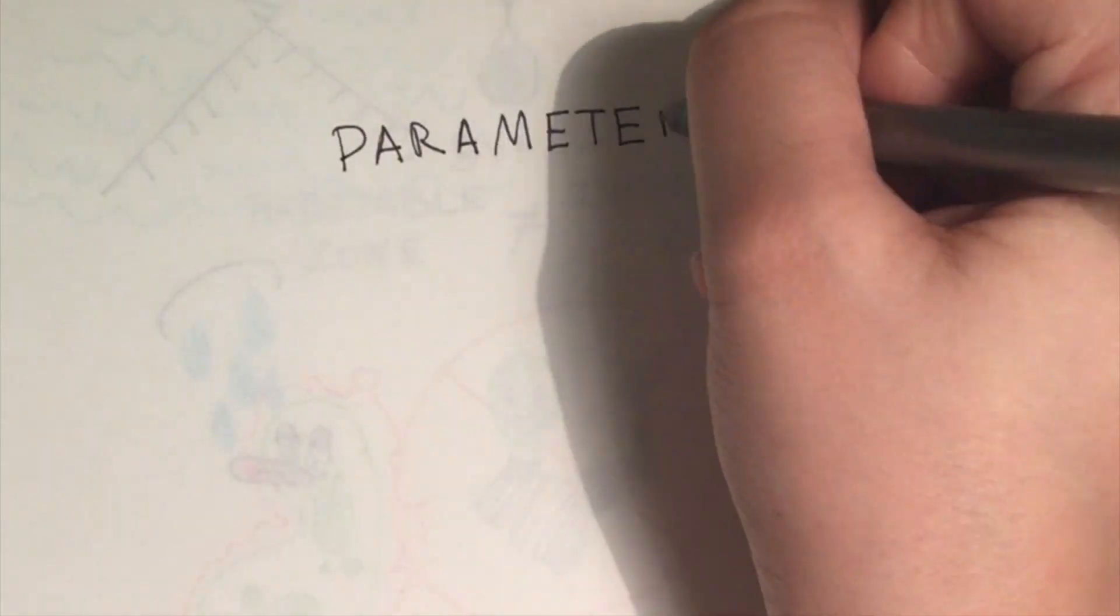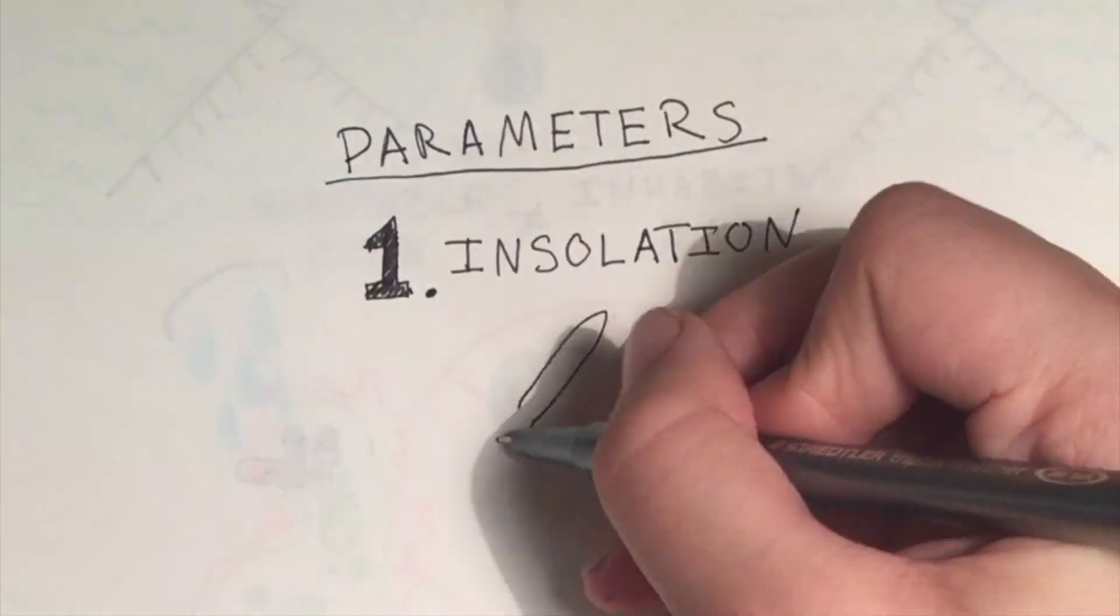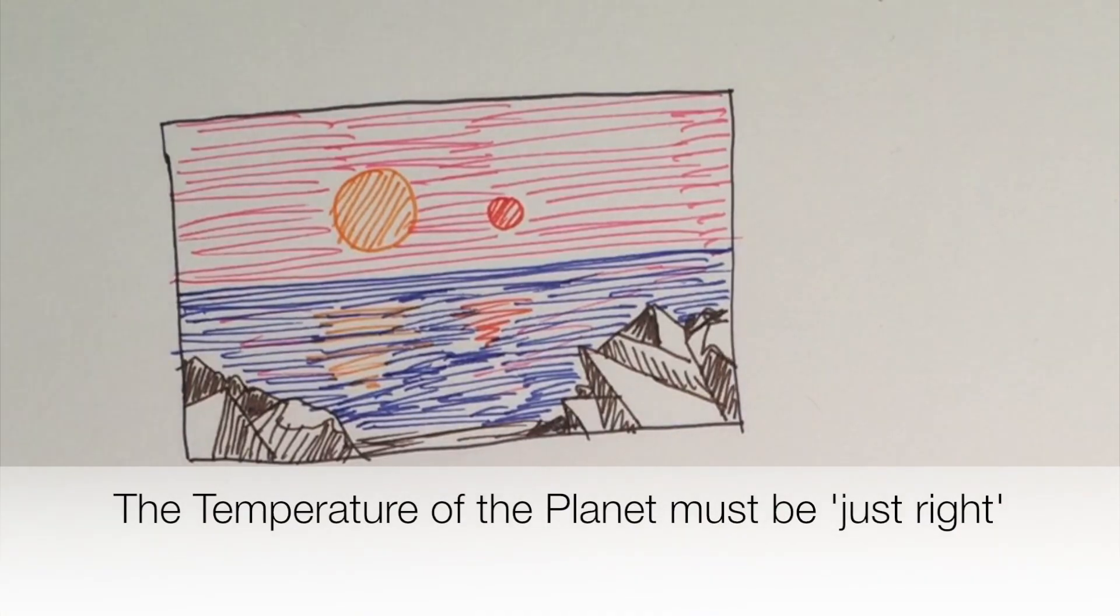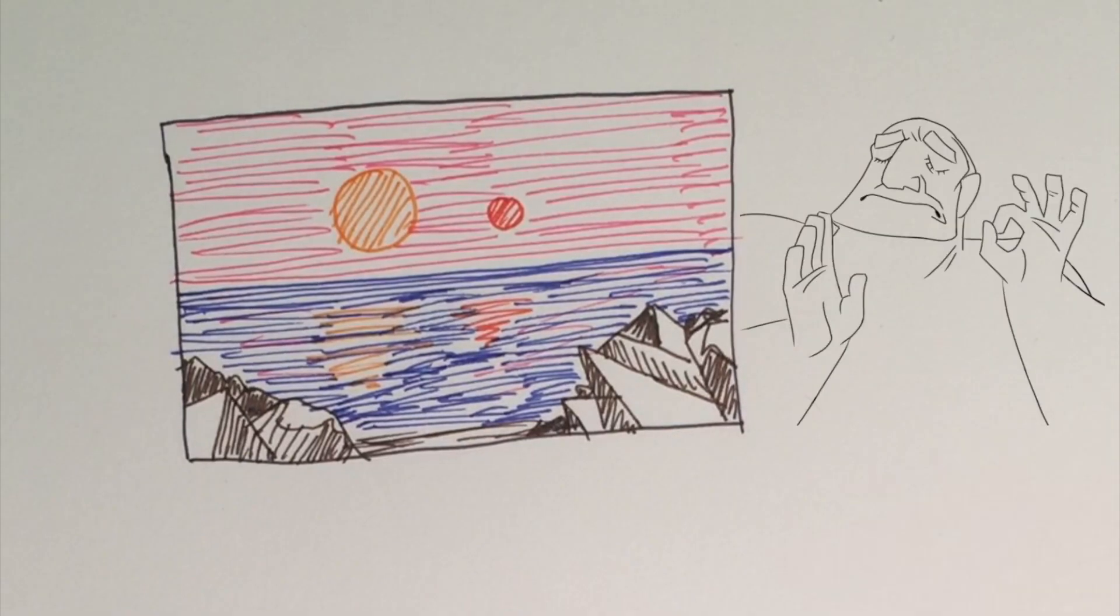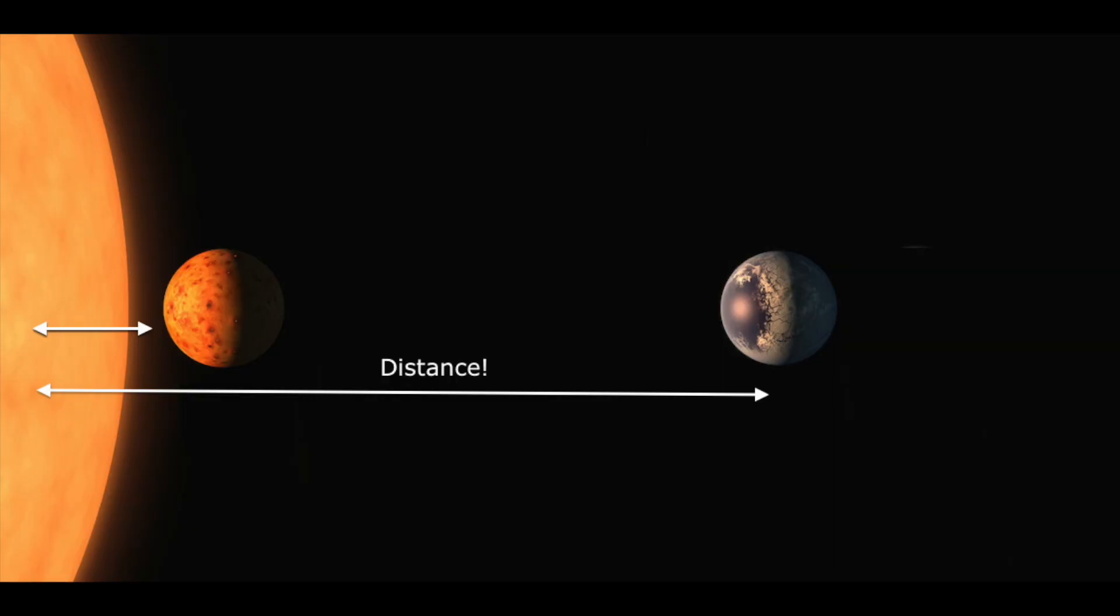Now for the juicy part, what affects the habitable zone distances? Well, we can think of it this way. For surface liquid water to exist, the temperature of the planet must be relatively moderate. For the temperature of the planet to be just right, the energy or light that the planet receives must also be just right. And what affects the amount of light that the planet receives? Simple, distance from the star.